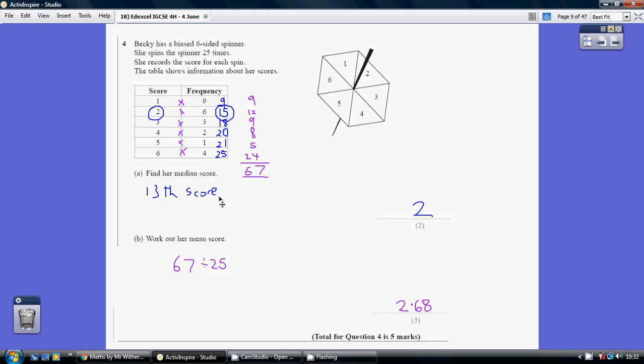The score she got with the 13th spin. Because if you think about it, her 13th score has 12 scores before that, 12 scores after it, plus the one in the middle. That's the 13th score.